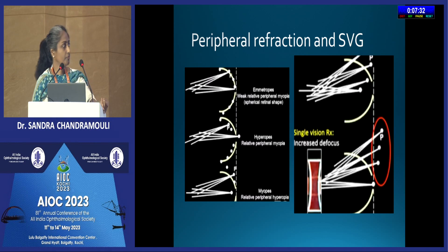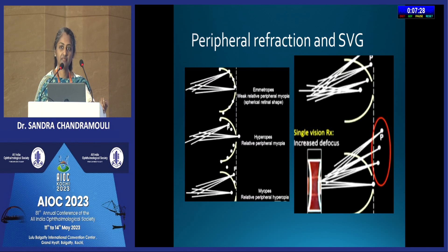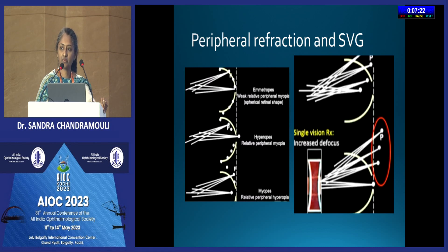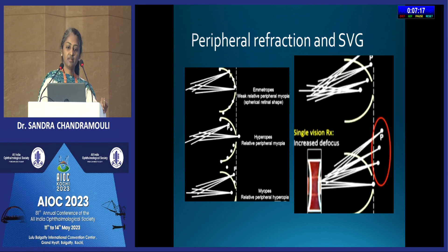When myopic patients are put on single vision diverging glasses, the relative peripheral hyperopia is worsened, which results in faster myopia progression. Whenever there is relative peripheral hyperopia in such eyes, if we put them on single vision glasses, myopia will continue to progress faster than expected. Lenses that create myopic defocus can help control this progression.